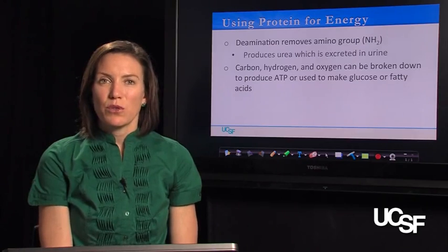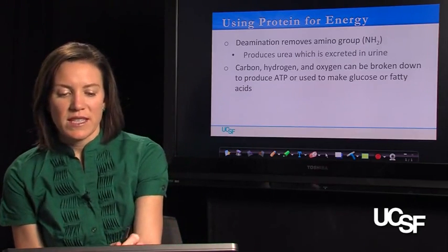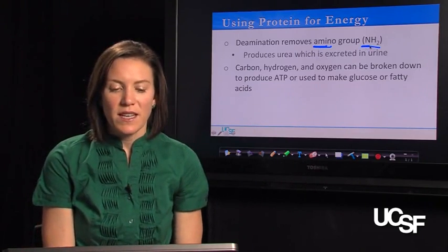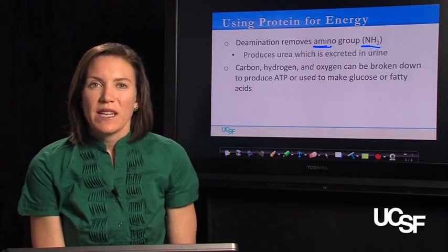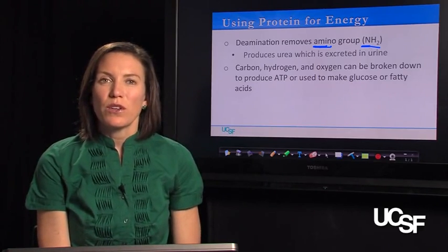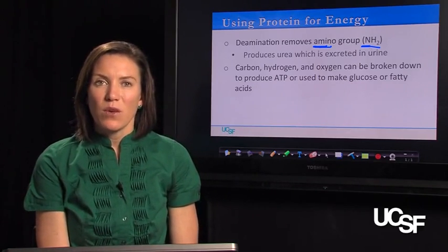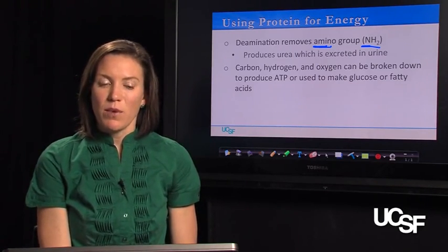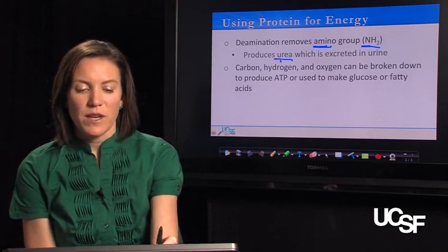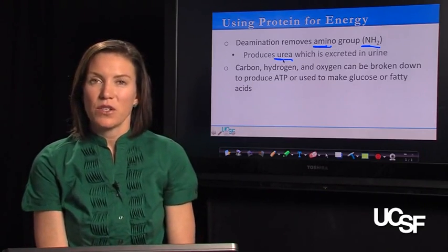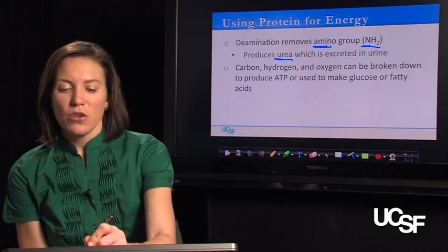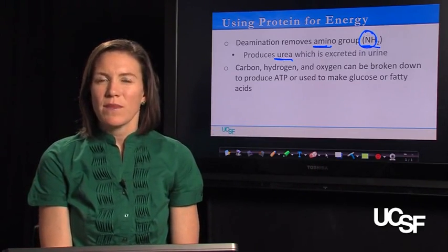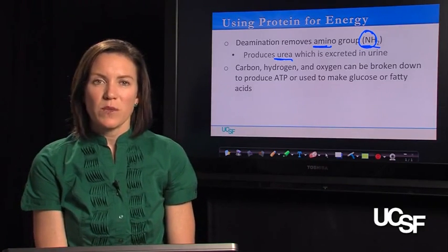Protein is the only macronutrient that contains nitrogen, which is in the amino group. The process of deamination is what your body goes through to remove that amine or nitrogen-containing component. Nitrogen plays an important role and is a big component of your urea, a waste product excreted in your urine. Your body uses nitrogen for a number of processes to build body proteins, but ultimately it is essentially a waste product.